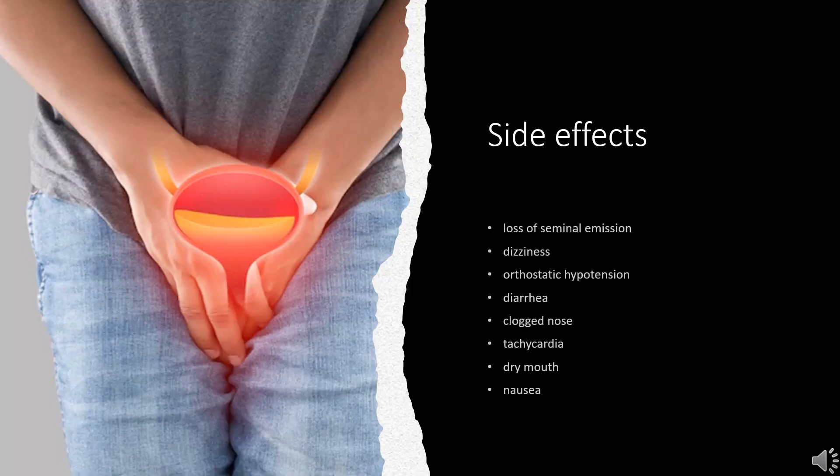Side effects: The most common adverse effect is loss of seminal emission. This seems to be caused by silodosin's high selectivity for alpha-1A receptors. Other common adverse effects, occurring in more than 1% of patients, are dizziness, orthostatic hypotension, diarrhea, and clogged nose.